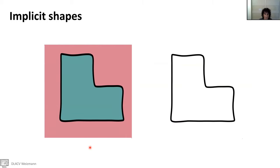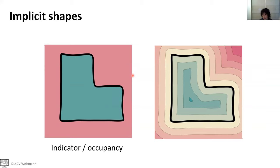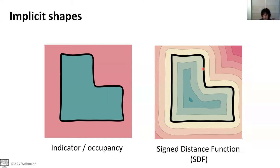Of course, given a shape, we can have several ways to represent it implicitly. One popular choice is the indicator function, which says that inside we have negative values and outside we have positive values, and the shape itself is zero on the surface. On the other end, there is the signed distance function, where inner points have negative distance to the shape and outer points have positive distance. On the shape itself we have zero — this is the zero-level set.